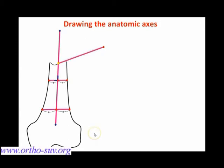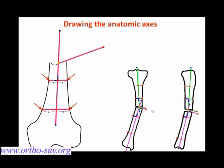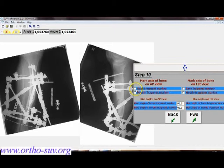How do we draw the anatomical axis? In diaphyseal deformity, we mark it by placing the red points on the cortices of the bone fragment — you can see this shown for the distal femur and for the tibial bone. The yellow point is usually placed on the border of the bone fragment when there is no gap between bone fragments. The same procedure is done on the lateral view.